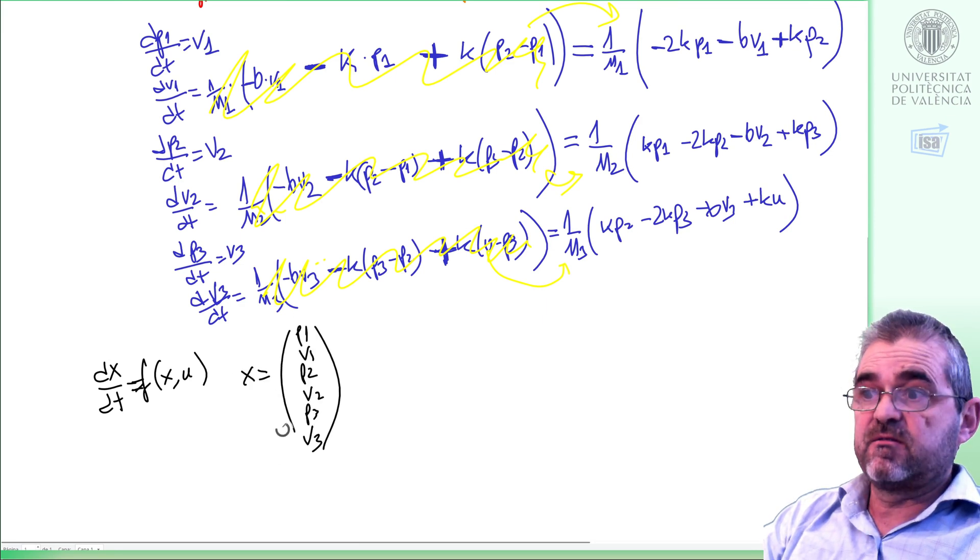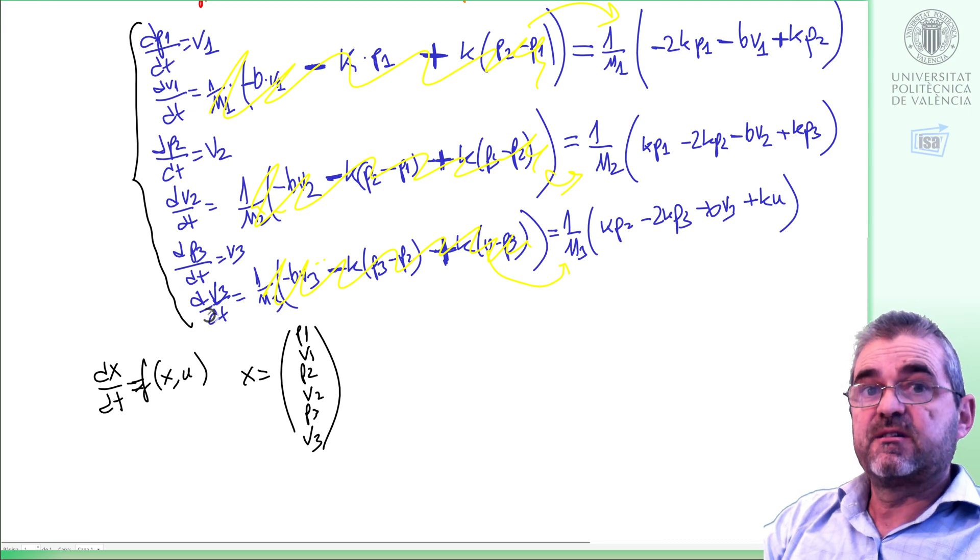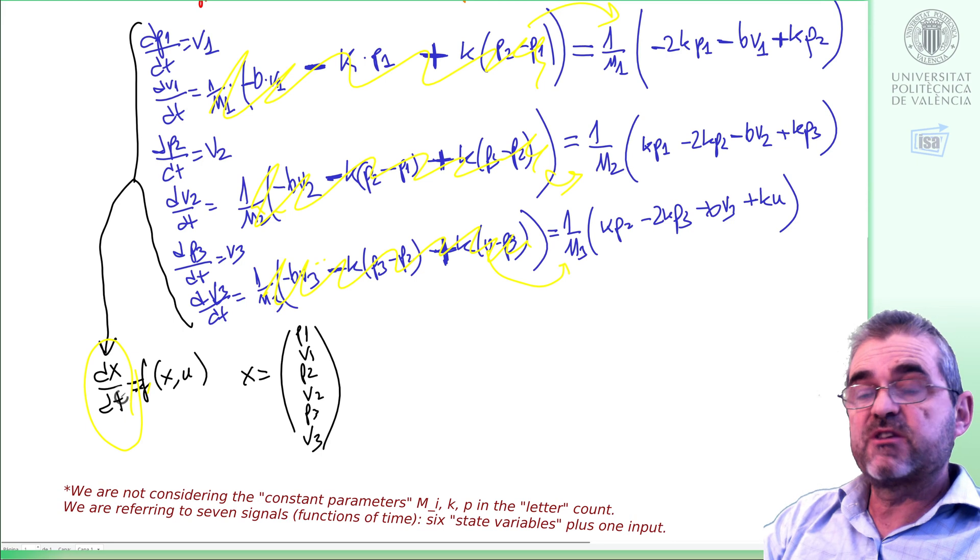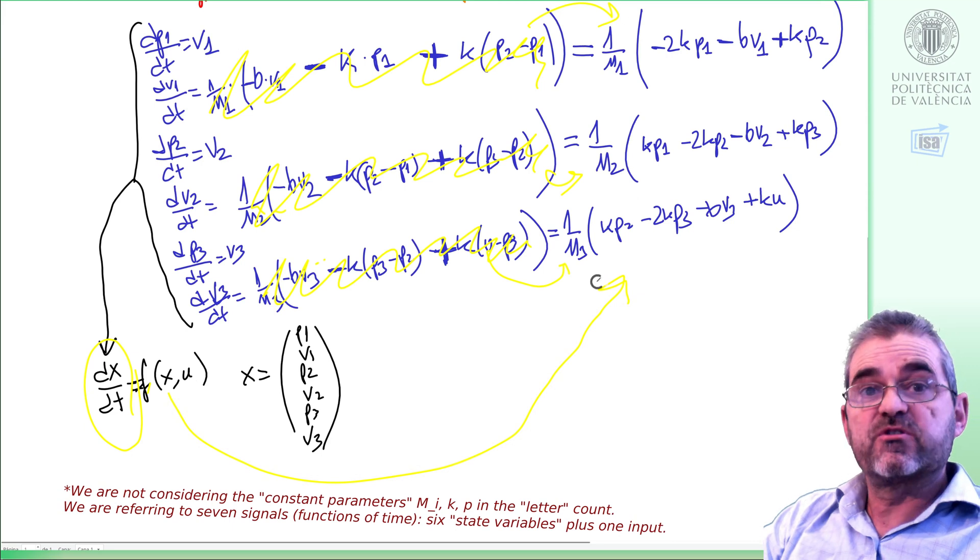In fact note that the normalized state space representation is something in the form like this. So if I name x as this vector, then I have already written my equations in normalized form because these six derivatives at the left hand side of the equal sign is what this dx/dt represents. This is sixth dimensional and this f(x,u) represents the six equations at the right hand side of the equal signs in which only the letters in this vector appear plus input u.